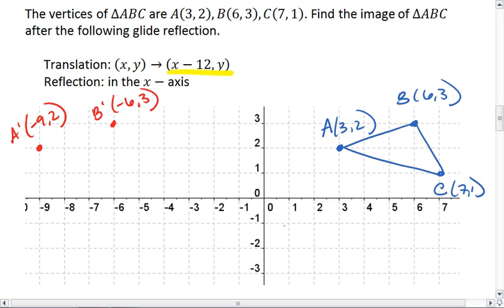And then C is at 7, 1. 7 minus 12 is negative 5. So C prime is at negative 5, 1. And there is A prime, B prime, C prime.